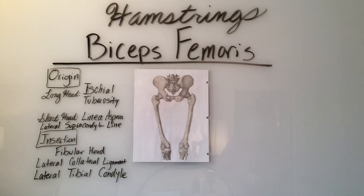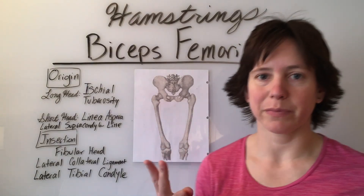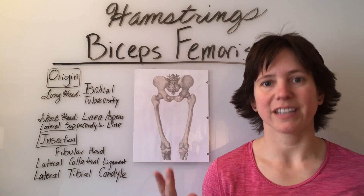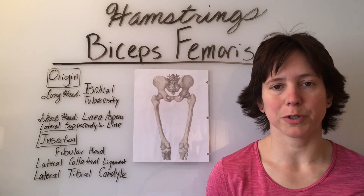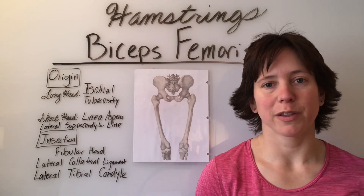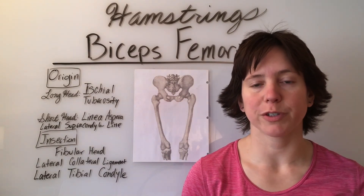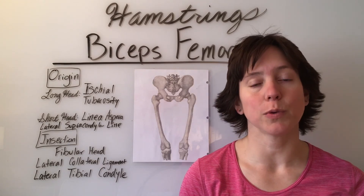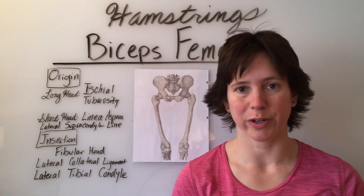The hamstrings consist of three muscles: the biceps femoris, semitendinosus, and semimembranosus. First we'll go over the biceps femoris, which has two heads — a long head and a short head.